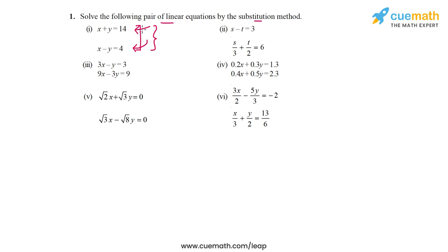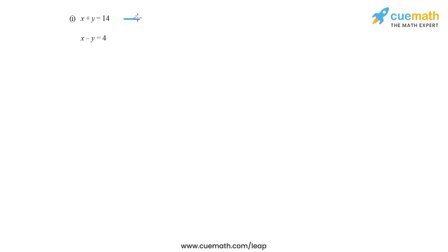So this is what the substitution method is, and its application will become a lot clearer as we solve each part. Let's start with the first pair: x plus y equal to 14 and x minus y equal to 4. Let's use the first equation and write y in terms of x. I can write x in terms of y or y in terms of x, using either equation — it does not matter. Taking the first equation, y is equal to 14 minus x.